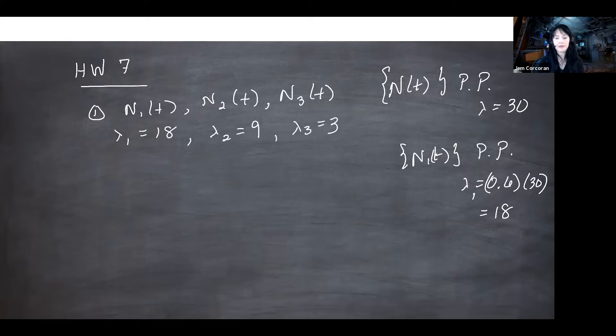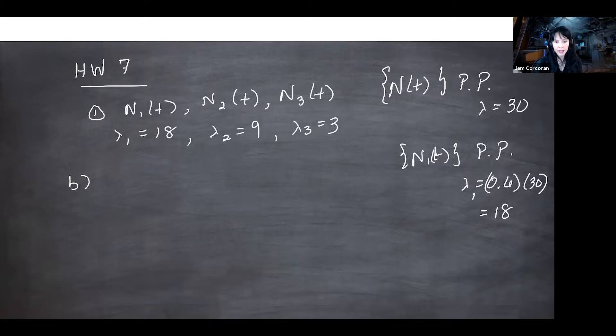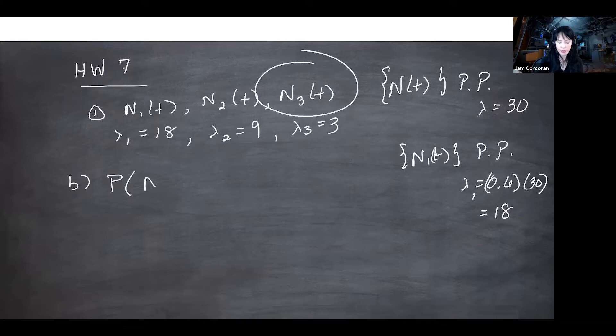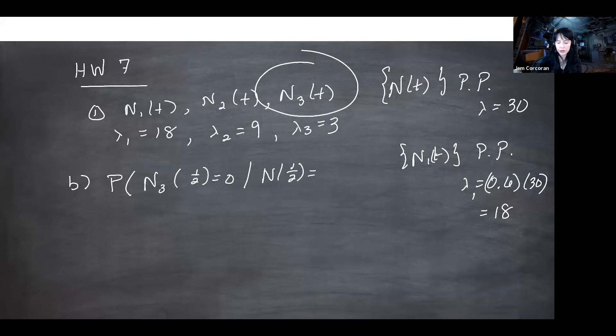For part b, the first 30 minutes the bank is open — so far all the rates have been given in hours, so let's work in hours and use one-half instead of 30 minutes. We want the probability that none of these 20 customers are there for a mortgage transaction. So we want the probability that the mortgage transaction process N3 at time one-half equals zero, given that the total process N at time one-half equals 20. There are two ways to answer this.